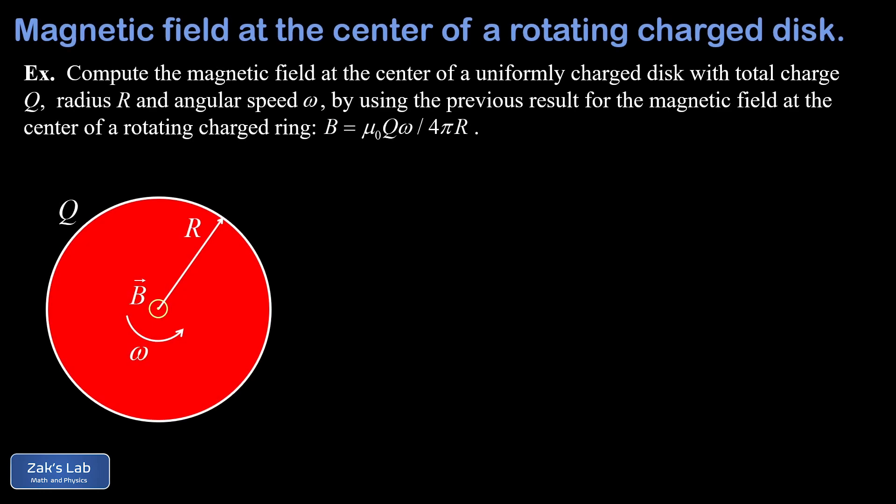In this video, we're computing the magnetic field at the center of a uniformly charged rotating disk. So here's our disk with a radius of big R, total charge big Q, and angular speed omega.